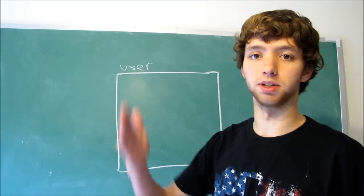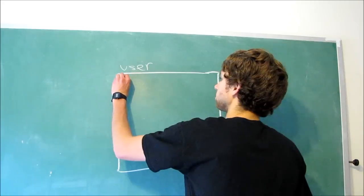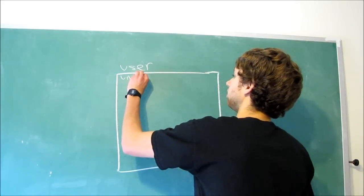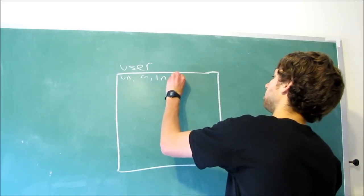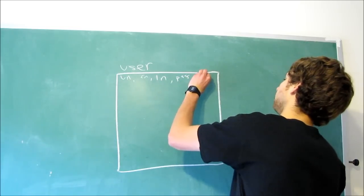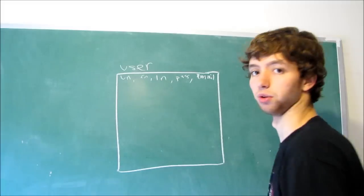Now, each individual row within this table is going to be a new user. Each column is going to be a thing about the users. So, the columns can be username, first name, last name, password, and email. Just for an example.